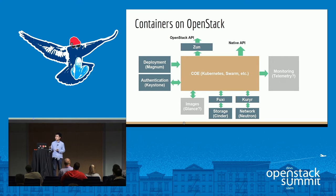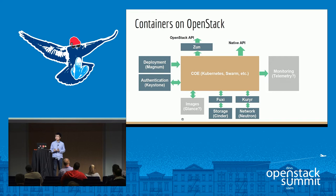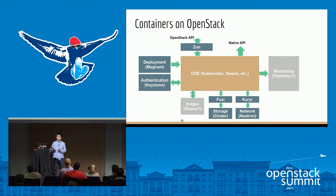Another set of problems involves networking and storage. For networking, in the container community the general solution is to do port mappings or use a virtual network solution such as Flannel. There is a drawback to this approach in OpenStack because port mapping is very complex to manage, and solutions like Flannel create overlay networks that have a performance problem because traffic is encapsulated twice. The natural solution in OpenStack is to use Neutron to provide networking for the containers, and the Kuryr project was created to bridge the COEs to use Neutron.